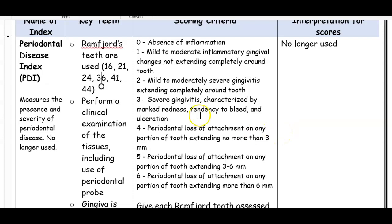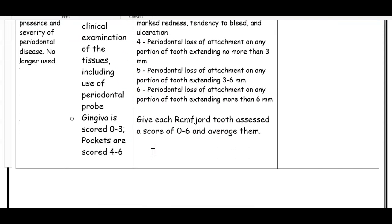Just know that it exists. They used Ramfjord's teeth and were given a score of 0 to 3 for gingivitis and 4 to 6 for pockets or periodontitis.